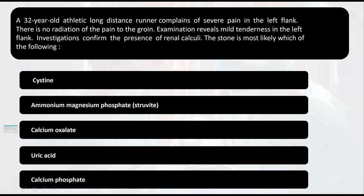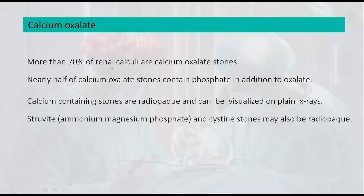Simply, three quarters of all renal calculi are calcium oxalate stones. Half of these calcium oxalates also contain phosphate in addition to oxalate, and they can be visualized on X-ray.